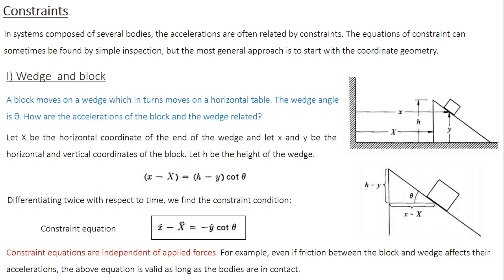The thumb rule is that the number of equations should be greater than or equal to the number of unknowns. Only then can you solve it effectively and find a definite answer. More number of equations, the analysis is going to be easier. Typically, in systems composed of several bodies, the accelerations are often related by constraint. If you recollect the train example from last class, the three compartments are connected together; consequently the acceleration is the same for all three compartments. So here the acceleration is constrained, and you can write down the corresponding constraint equation.